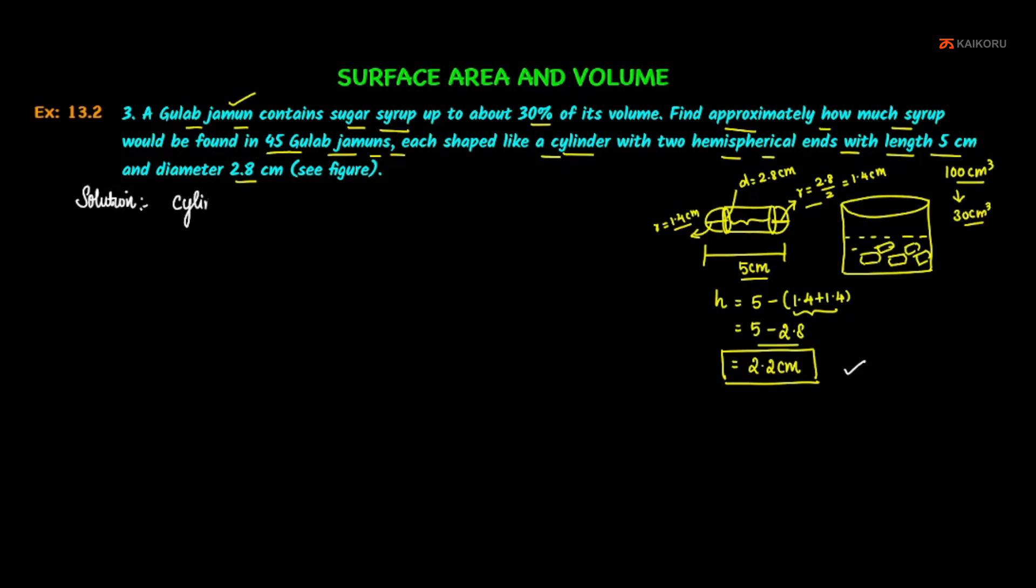First we have the cylinder details: radius equals 1.4 cm, height equals 2.2 cm. Hemisphere radius equals 1.4 cm. Volume of one gulab jamun equals volume of cylinder plus volume of two hemispheres. Volume of one gulab jamun equals volume of cylinder plus two times the volume of hemisphere.